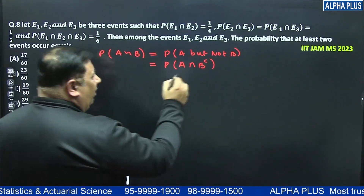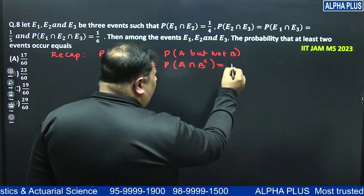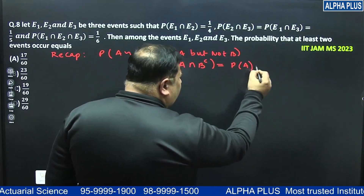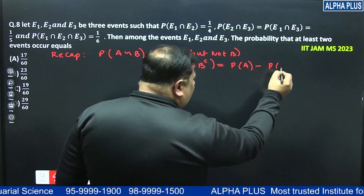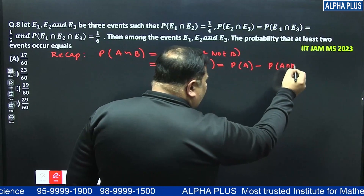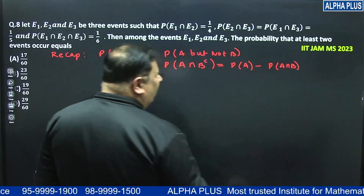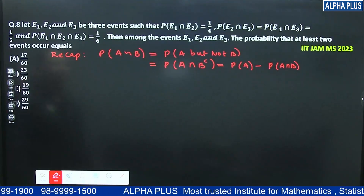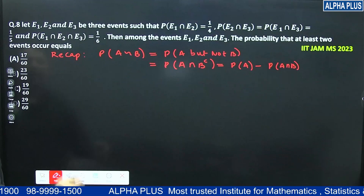So what is the formula? It is probability of A minus A intersection B. So if you know this thing, then you can solve the whole question.